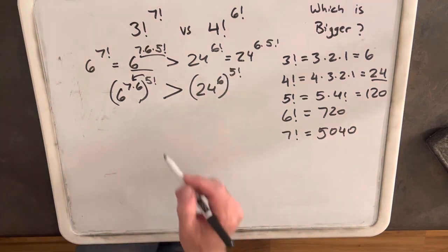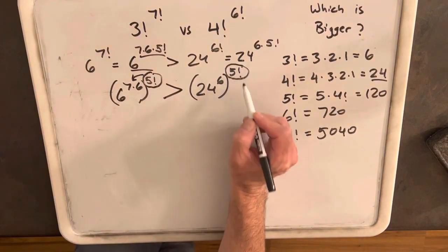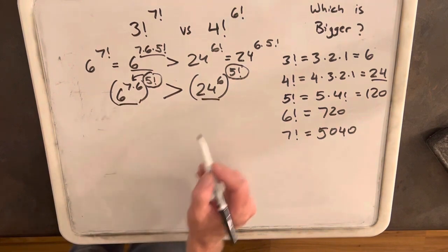And then by doing that, you'll notice that now we have the same exponent here and the same exponent here. So that will allow us to just compare the bases.